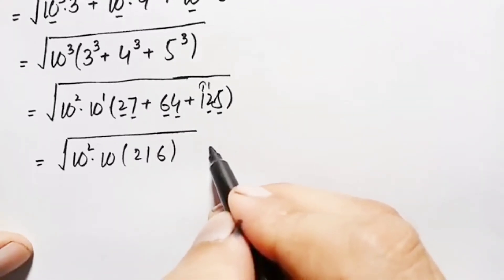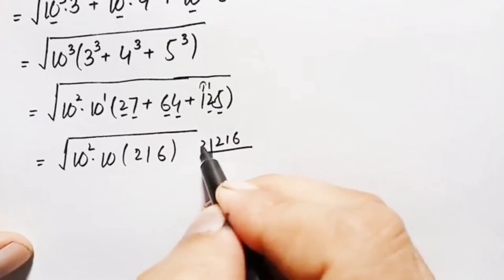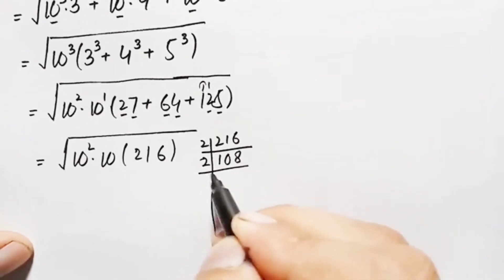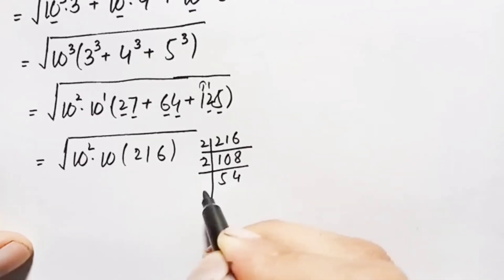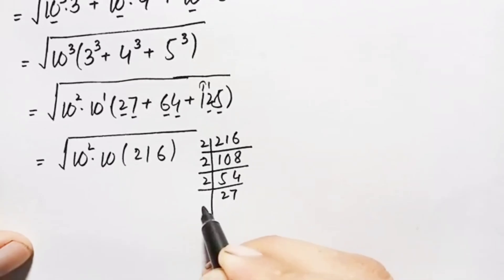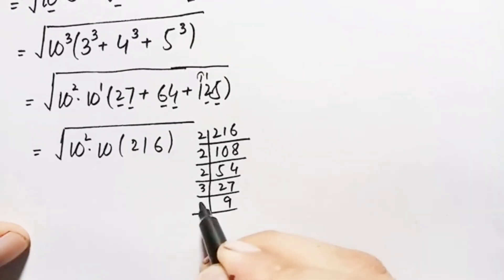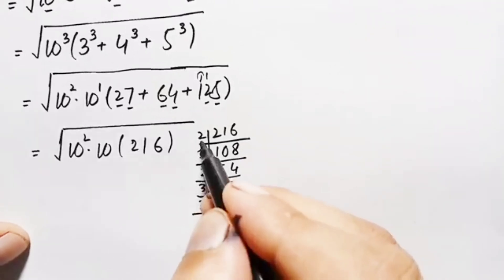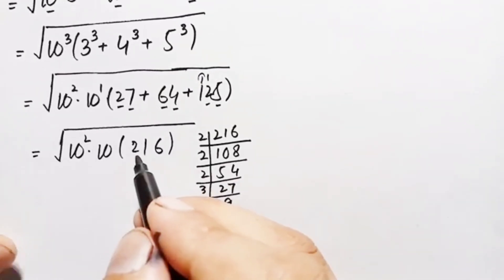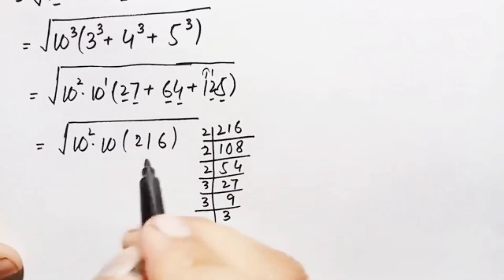Next we factorize 216. It is even, so divisible by 2: 216 ÷ 2 = 108, 108 ÷ 2 = 54, 54 ÷ 2 = 27. Then 27 ÷ 3 = 9, 9 ÷ 3 = 3, 3 ÷ 3 = 1. So 2 appears 3 times and 3 appears 3 times. Therefore 216 = 2 cubed times 3 cubed.